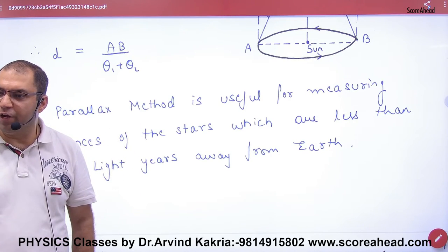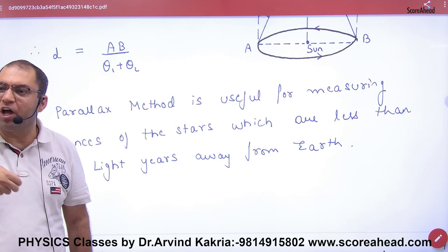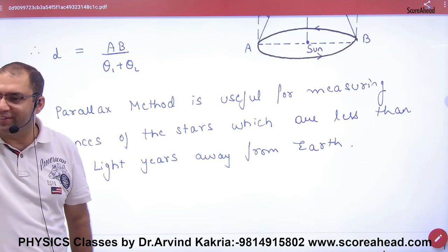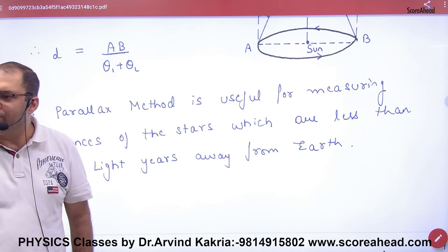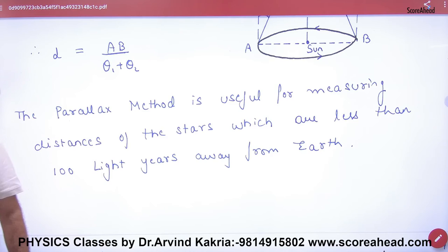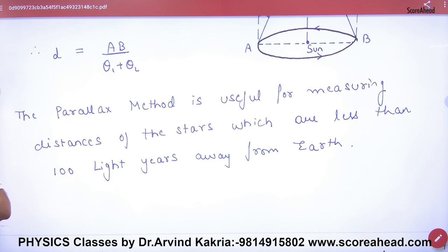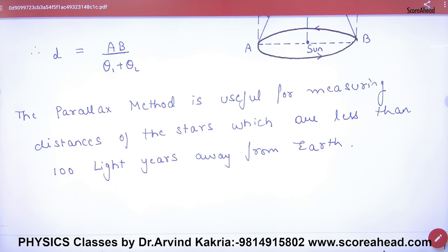We can travel at the speed of light conceptually, and we can reach the moon or sun, but stars are so far away that we measure their distance in light years. A light year is the distance light travels in one year.